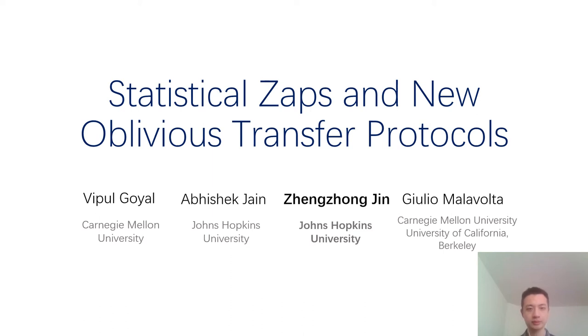This work is about statistical ZAPs and new oblivious transfer protocols. I am Zheng Zhongjing from Johns Hopkins University. This work is joint with Vipul Goyal, Ipsit Maji, and Giulio Malavolta.